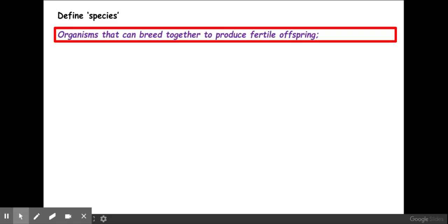For example, two tigers can breed together to produce fertile offspring, but a tiger and a lion cannot produce fertile offspring. Their offspring would be called a liger, which is not fertile.